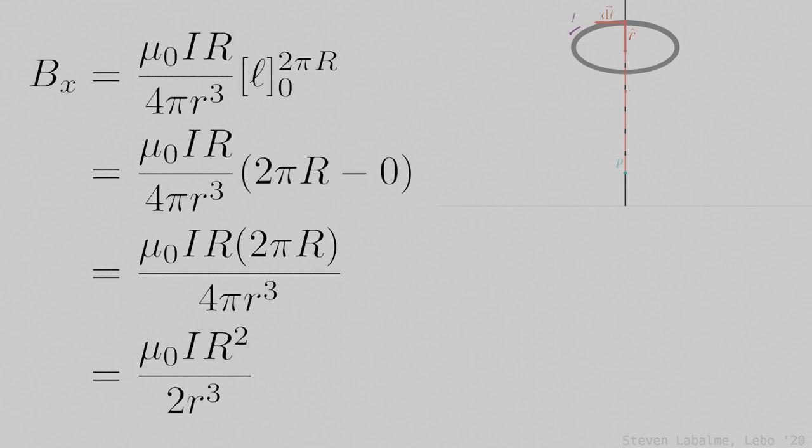Evaluating the integral and simplifying gives us a final equation for the magnetic field at point P given all the other initial parameters. Note that the equation could be expressed in terms of the distance from the center of the ring of charge to point P, but because of the simplicity of this equation and the simple Pythagorean transition to the other, I have chosen to leave it this way.